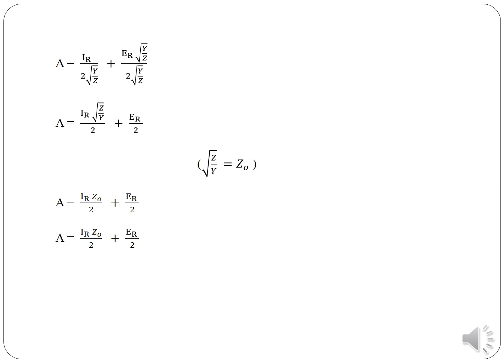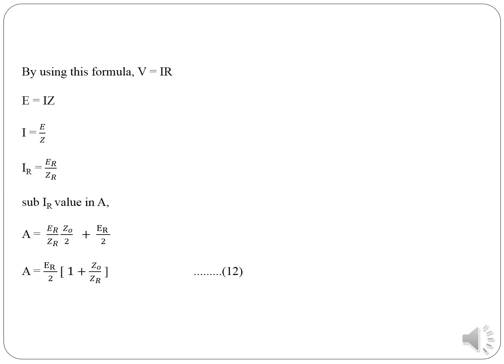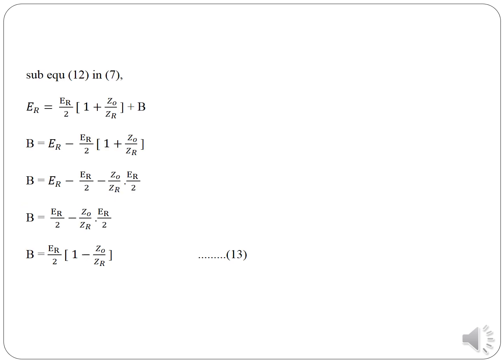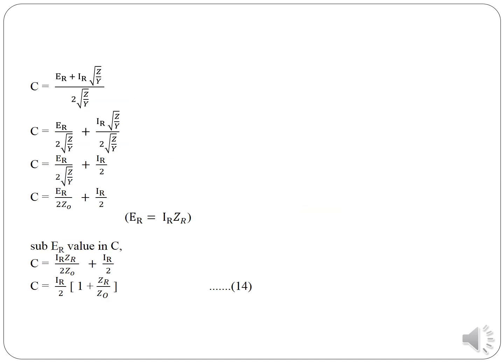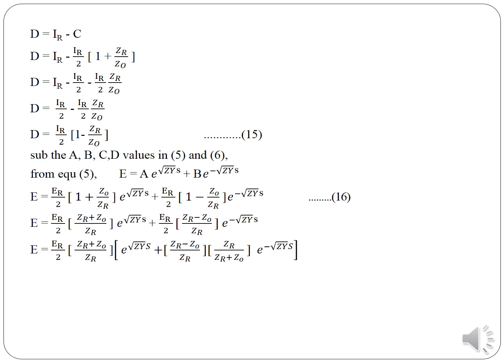Taking LCM, A = (IR·√(Z/Y) + ER) / 2. Substituting into the other equation gives B = ER/2 · (1 − Z/ZR). Since IR = C + D, we have D = IR − C. Substituting gives C = (ER + IR·√(Z/Y)) / (2·√(Z/Y)), which simplifies to C = (IR/2) · (1 + ZR/Z₀). Similarly, D = (IR/2) · (1 − ZR/Z₀).